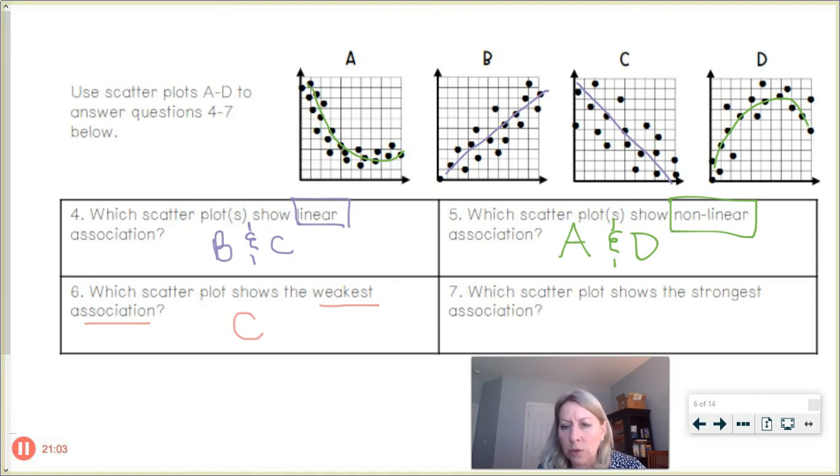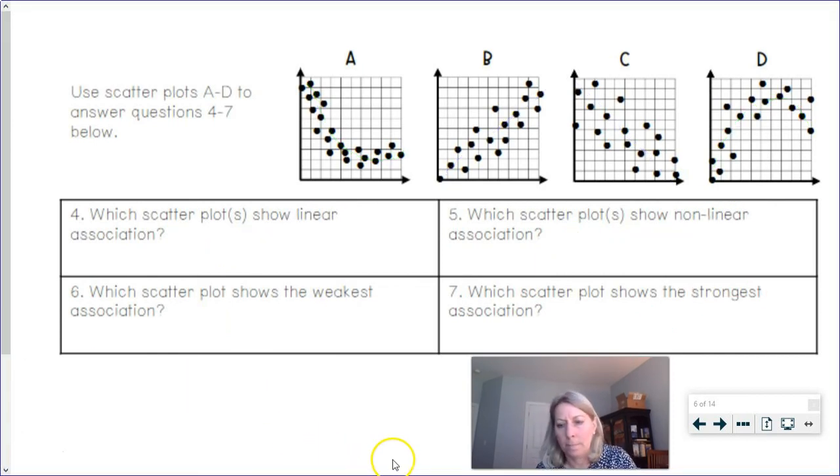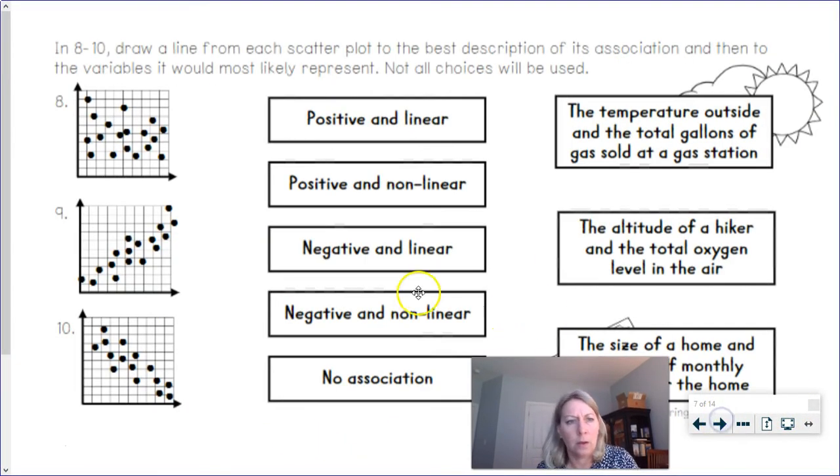And which scatter plot shows the strongest? Which ones are those points clustered together the most? Would be in the first one, A, because like all those dots are very tight together. Okay. Strongest association.